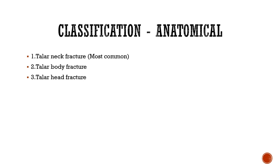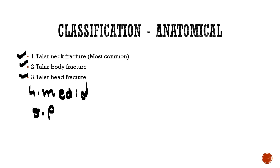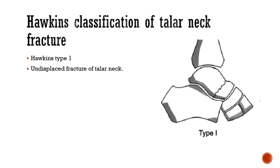Coming to the classification: there are two classifications — the anatomical classification and the Hawkins classification. The anatomical classification is straightforward: fractures are named by anatomical part — talar neck fracture, talar body fracture, talar head fracture, fracture of the medial process, or fracture of the posterior process. The most common fracture is the talar neck fracture.